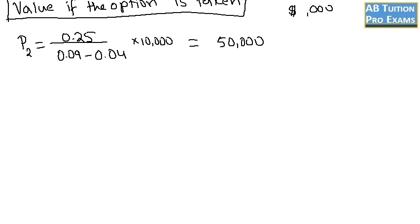But this would be the value of the company in two years. And we need to have the value of the company now. So we need to discount the 50,000 and find the present value.